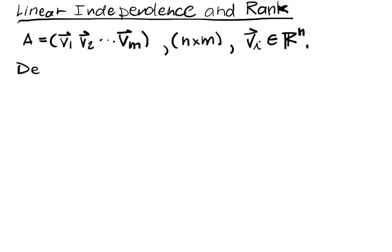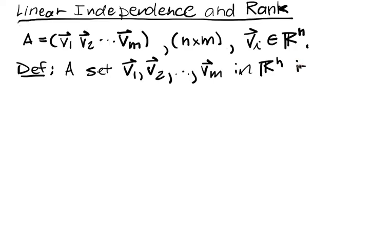The definition of linear independence is pretty simple. A set V1, V2, all the way up to Vm in R^n is linearly independent.